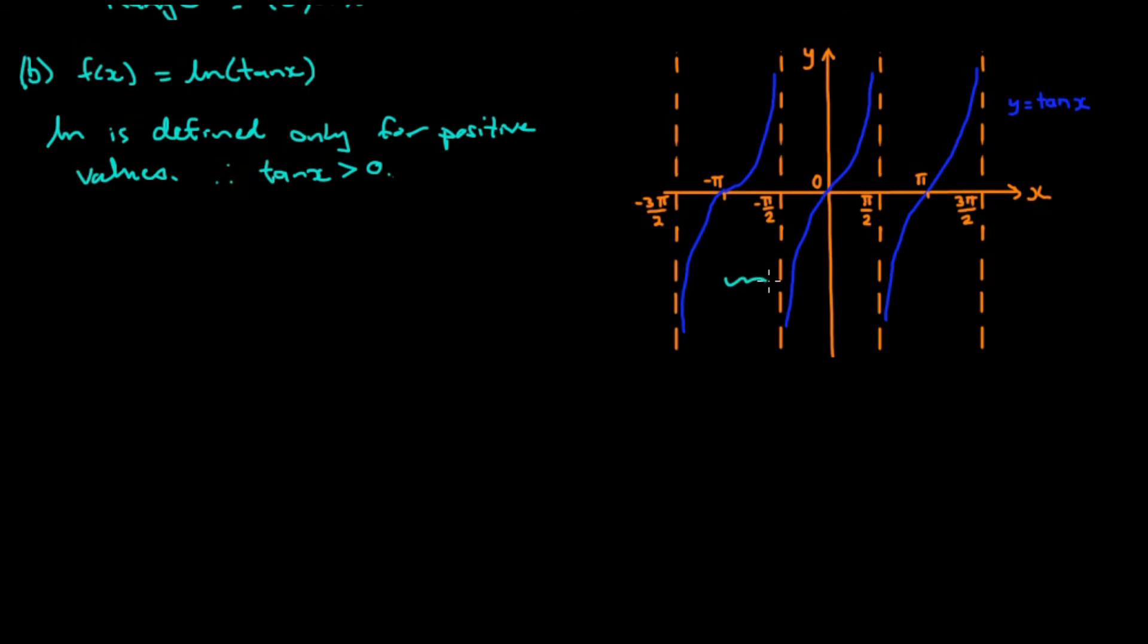Well that means we're looking on the graph at the parts of the curve that are above the x axis. So that's this set of values, this set of values, this set of values, etc.